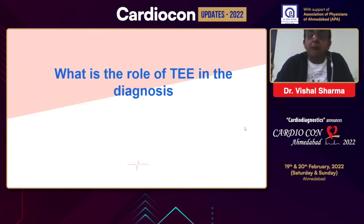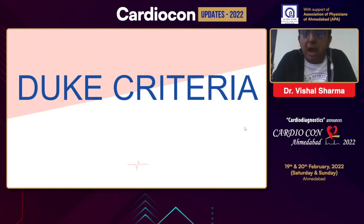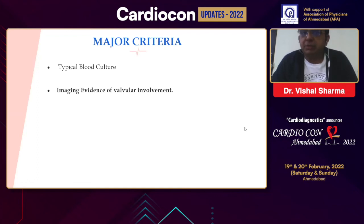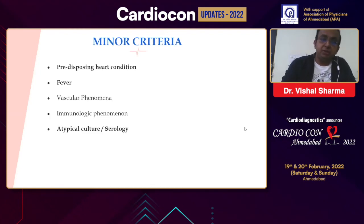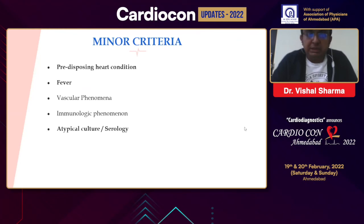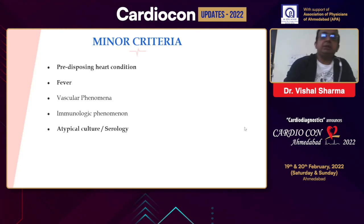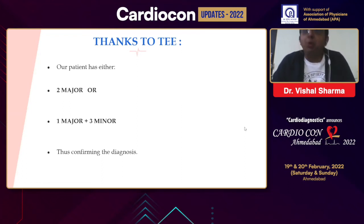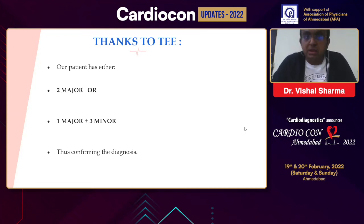So what is the role of TEE in our patient? How does TEE help the diagnosis? We go to the Duke criteria. The Duke criteria has been set for diagnosing endocarditis involving not only the native valve but also the prosthetic valve. It has two major criteria — typical blood culture and imaging evidence of valvular involvement by infection — and minor criteria including predisposing heart condition, fever, vascular phenomena, immunologic phenomena, and atypical culture or serology. Thanks to TEE, performing TEE in our patient would clarify that small structure attached to the mitral valve prosthesis, which would most likely be a vegetation as against thrombus or pannus, considering her history.